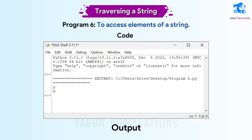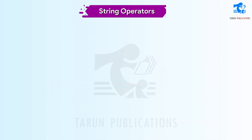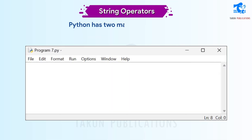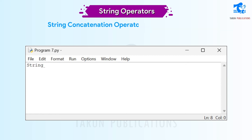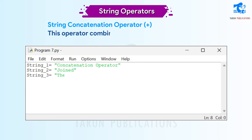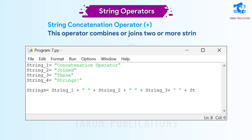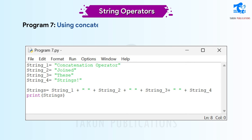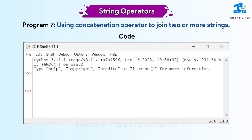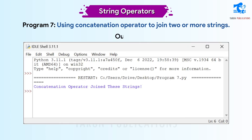String Operators. Python has two main string operators. String concatenation operator (+): this operator combines or joins two or more strings. Program 7: using concatenation operator to join two or more strings — code and output shown.